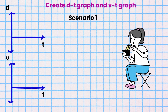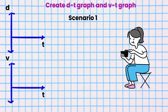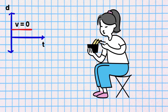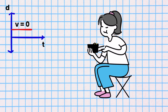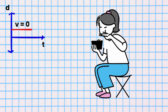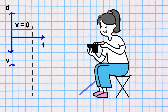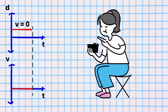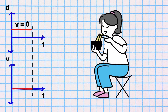Scenario 1. Ion is at rest eating her lunch. She has 0 velocity since she is at rest. So the DT graph is a horizontal line above the time axis. The VT graph would be a horizontal line on the time axis, indicating her velocity is 0.